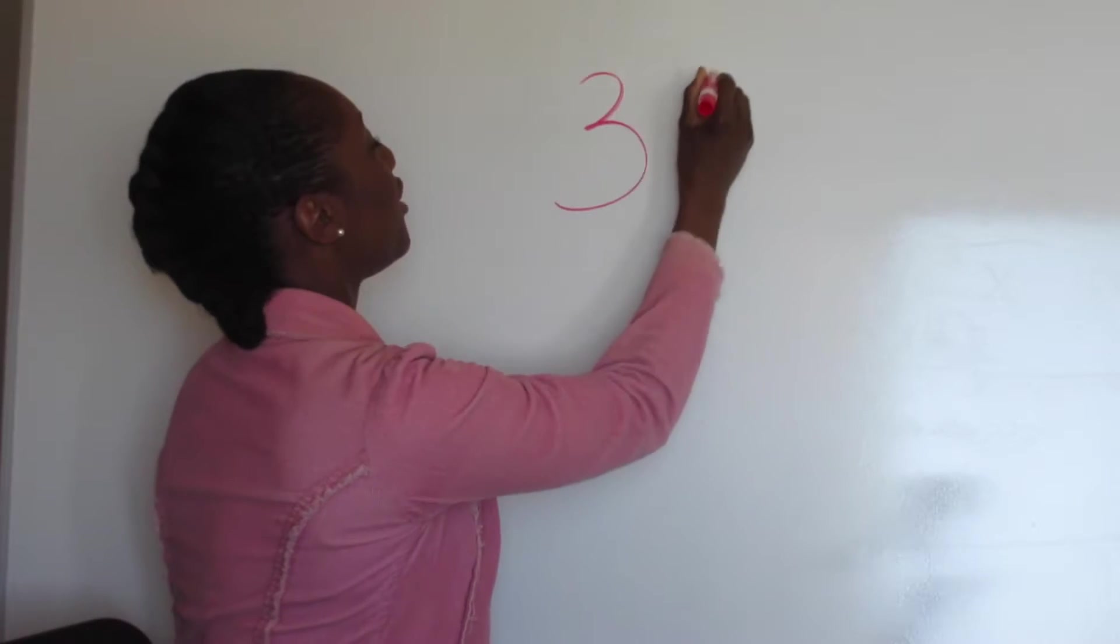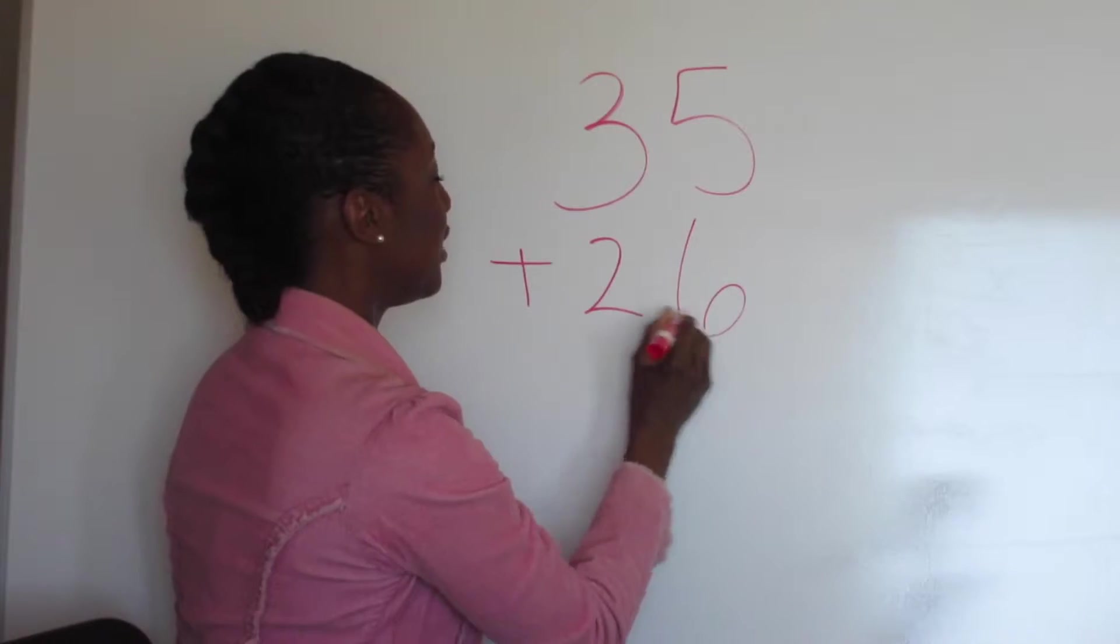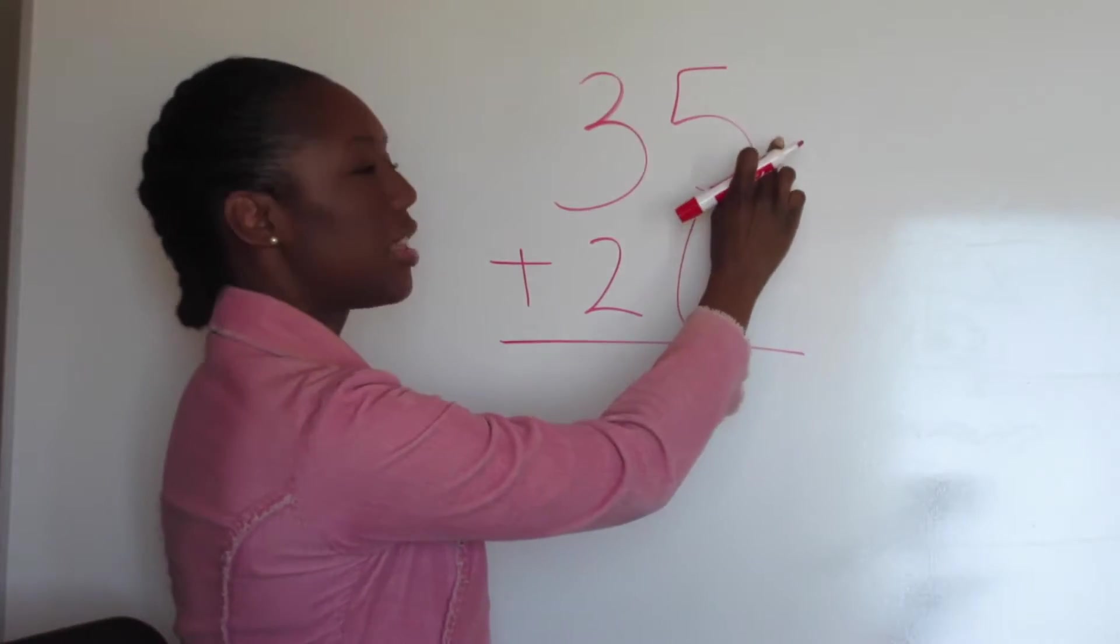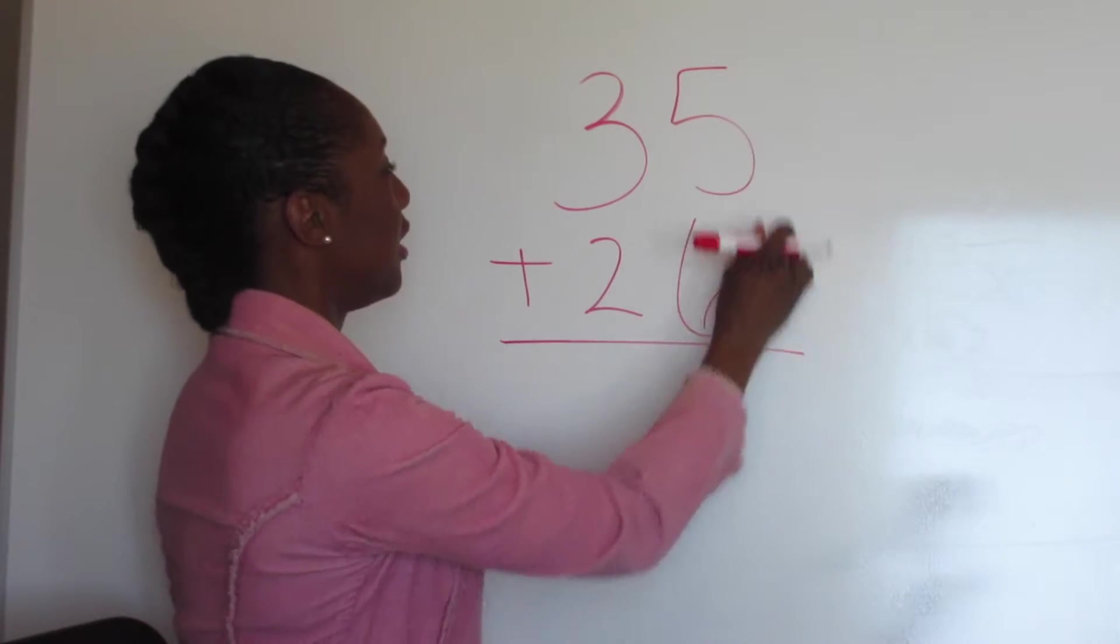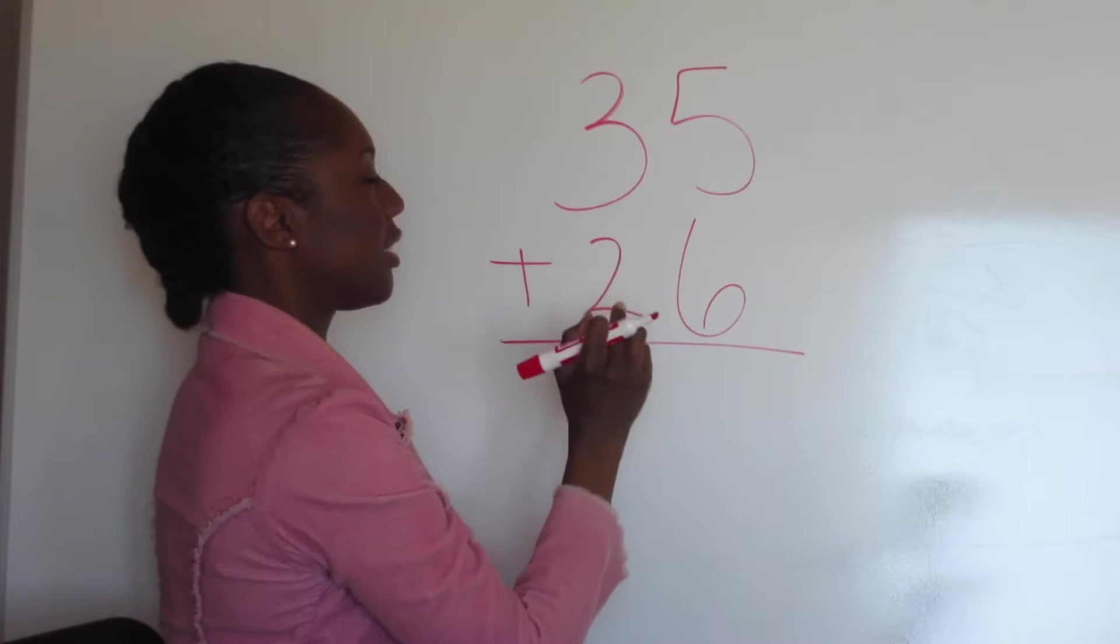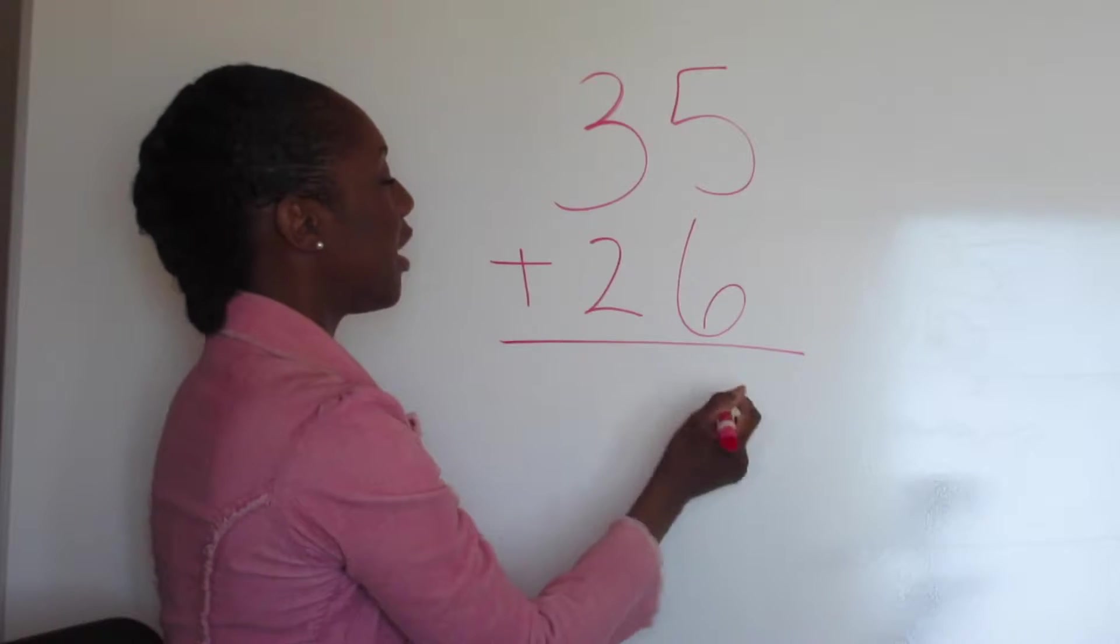Let's do 35 plus 26. What's the rule? First rule, start with the number on the right. These two. So we're going to add 5 and 6. Now we know touch math. So 5, start with 5: 6, 7, 8, 9, 10, 11.